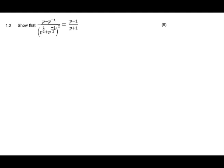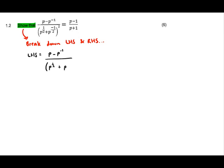The first question is 1.2 and it starts off by saying 'show that.' Whenever a question says 'show that,' what's important to remember is that you have to break it down into a left-hand side and a right-hand side. Start off by writing 'left-hand side equals p minus p to the negative one, all over p to the half plus p to the negative half.'